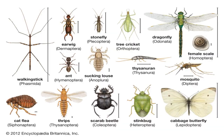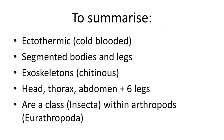The orders, families and species of insects are mind-blowingly diverse. Insects are the most diverse group of animals on our planet, coming in many shapes, forms, and colors and filling many niches. However, six legs, two antennae, a head, a thorax, an abdomen, and potentially wings remains a universal way to recognize them. To summarize: insects are ectothermic, have segmented bodies and legs, have exoskeletons made of chitin, have six legs, an abdomen, a thorax, and are potentially winged. Insects are class Insecta of Arthropoda.